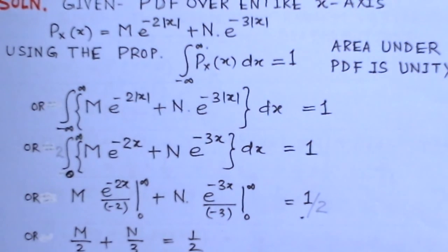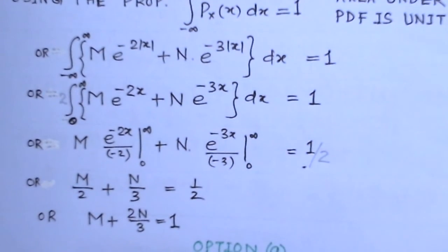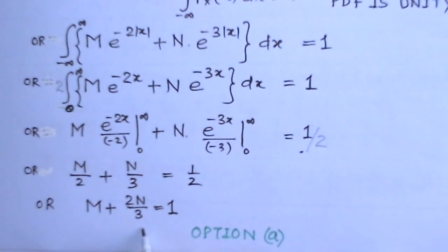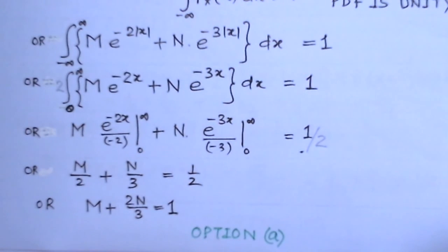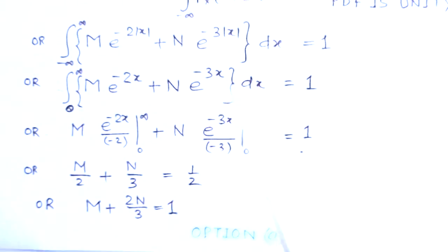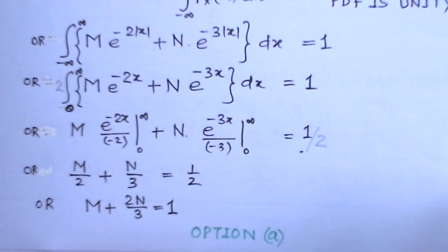Simplifying m/2 + n/3 = 1/2, we get m + 2n/3 = 1. We have obtained this relation, and it corresponds to option A. So the answer is option A. Thank you.